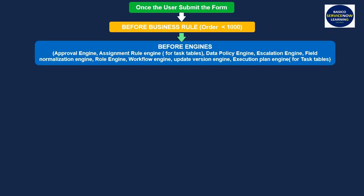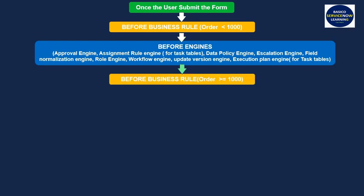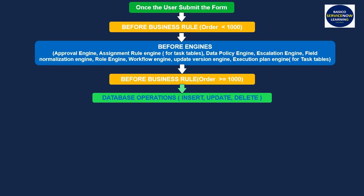After the before engines, before business rule scripts with order greater than or equal to 1000 get executed. After that, database operations such as insert, update, and delete are performed. Then, after business rule scripts with order less than 1000 get executed.